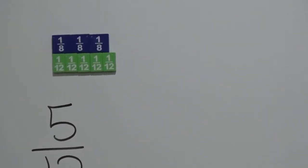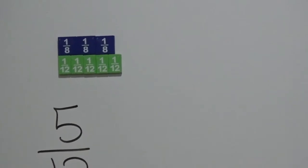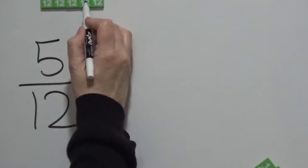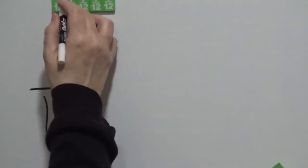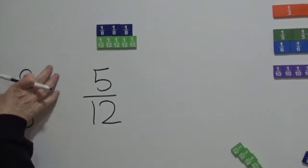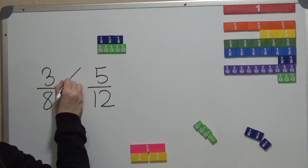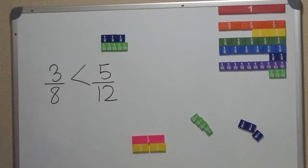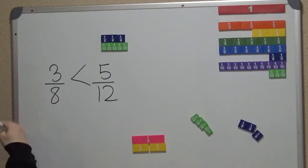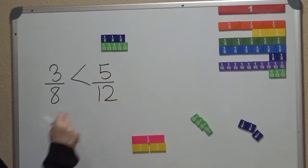...you can see that 5 twelfths is more than 3 eighths. And what did we say about Pac-Man? Pac-Man eats the larger number. And in this case, it's going to eat the fraction that's larger. And we can see that 1, 2, 3, 4, 5 twelfths is larger than 3 eighths. And we had it written this way with 3 eighths on this side. So we know the arrow is going to point towards this smaller fraction. So 3 eighths, when we're reading this from left to right, 3 eighths is less than 5 twelfths.